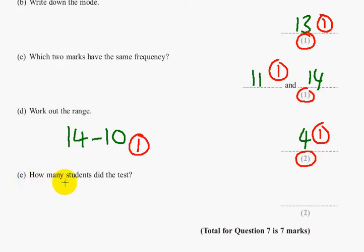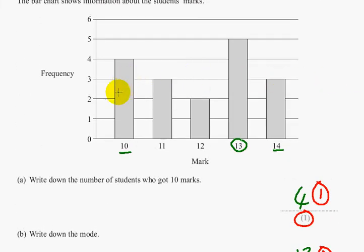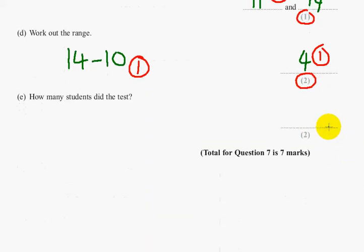Part E. How many students did the test? Well, there's 4 people here, 3 people here, 2, 5 people who got 13 marks, and 3 people who got 14 marks. So how many people did the test? 4 add 3 is 7, add 2 is 9, add 5 is 14, add another 3 is 17. So 17 is the final answer, and that's also worth 2 marks.